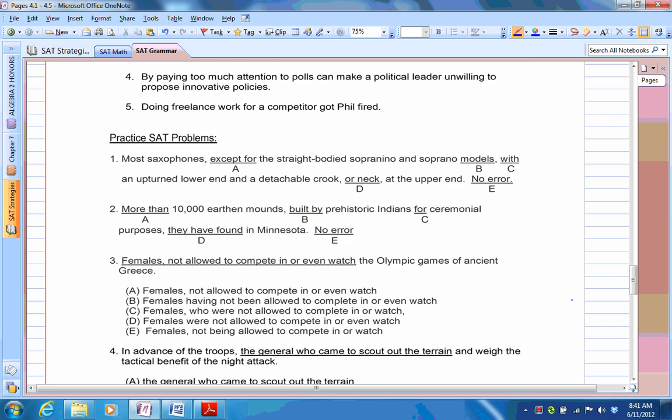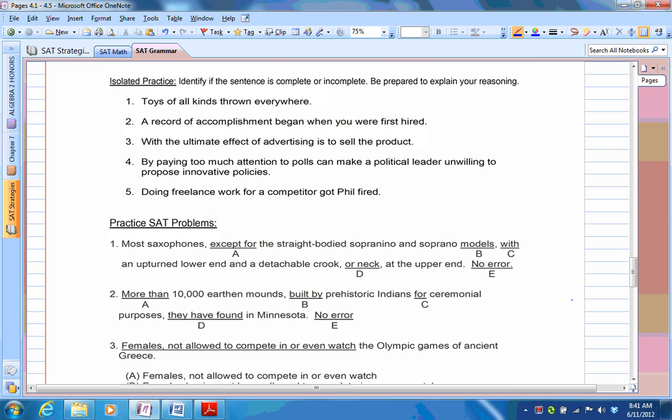So let's do some isolated practice, then some practice SAT problems. Identify if the sentence is complete or incomplete, and be prepared to explain your reasoning. Okay. Toys of all kinds thrown everywhere. Okay, so it's incomplete. Are thrown everywhere. And because we see the preposition of and toys, we gotta use a plural verb. A record accomplished began when you were first hired. That would be fine, because here you have your verb, here you have your subject. Everything's fine. That would be complete.